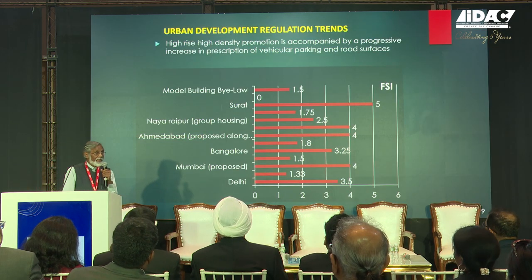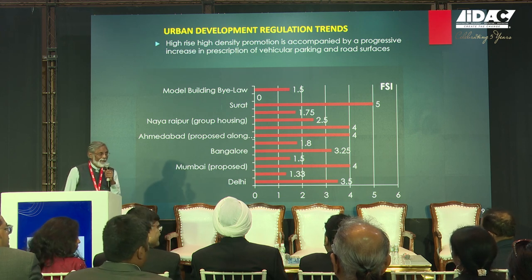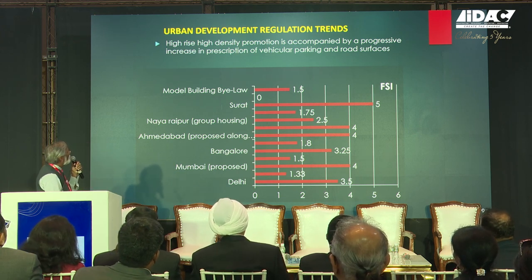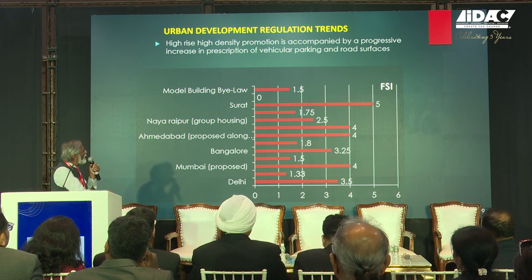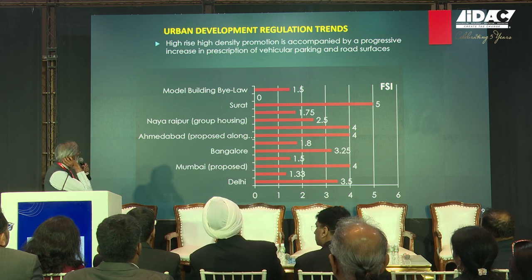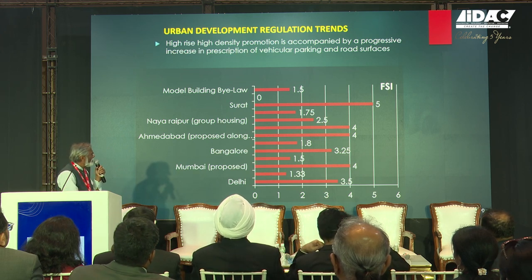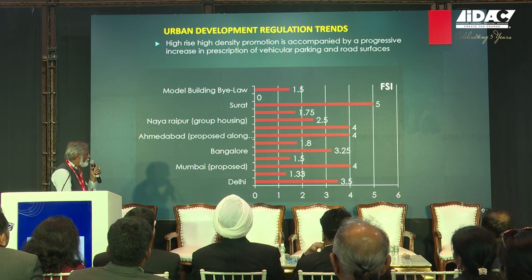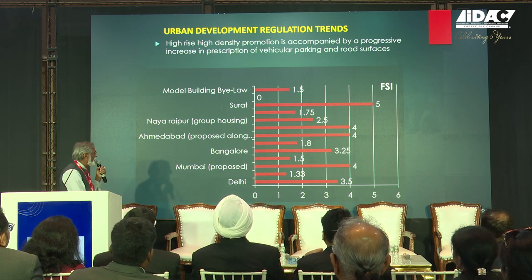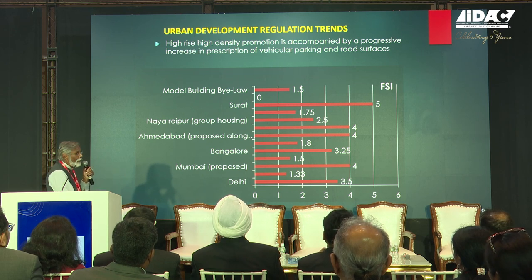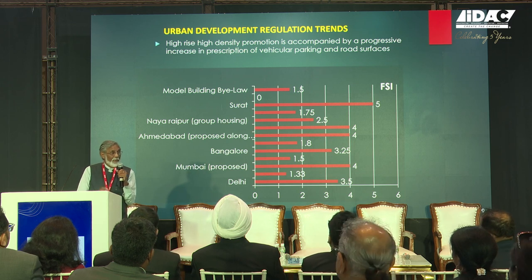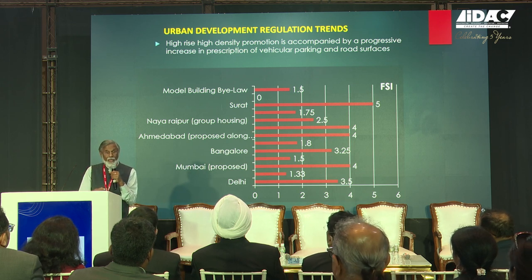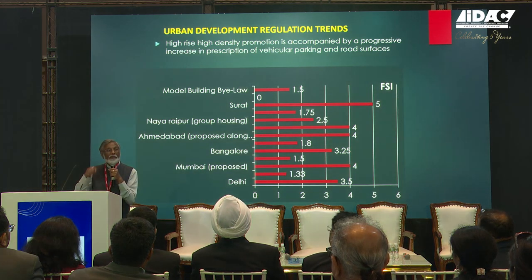What's happening to our bylaws? FSI. The model building bylaws, which are still at the center of government, talk about 1.5 FSI. But Ahmedabad Ring Road has FSI of four; Mumbai has four in some areas; Delhi has now gone to 3.5; Surat has gone to five FSI. What does it mean? Buildings are going to get taller and taller. If you have this as the permissible FSI, you're making cities be taller and taller.